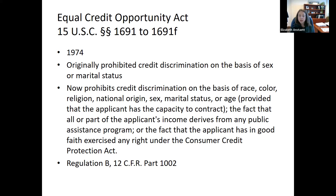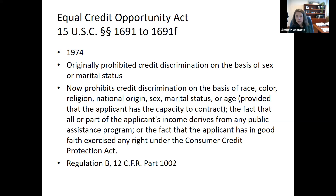ECOA also prohibits discrimination based on the fact that you receive income from public assistance, or that you have exercised any of your rights under any of these consumer protection statutes. You might notice that this list does not seem all-inclusive — state anti-credit discrimination laws add additional categories such as handicap or sexual orientation. And in the area of discrimination there is no preemption, so a bank must comply with the federal Equal Credit Opportunity Act and any state counterparts that may add additional bases.